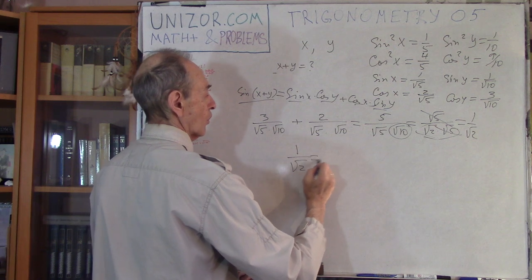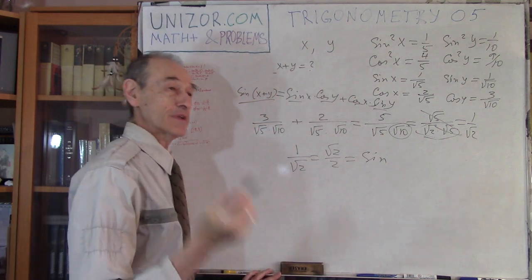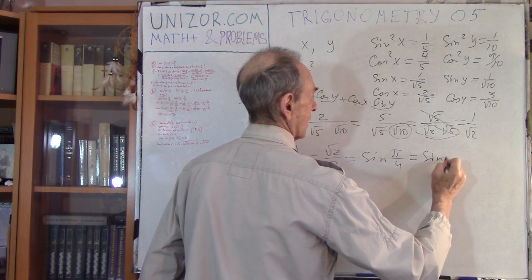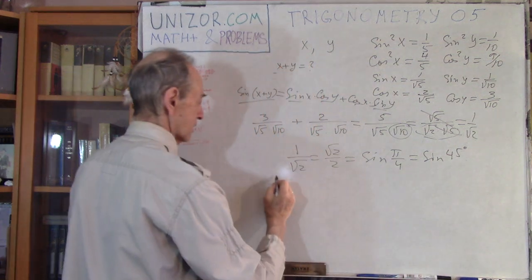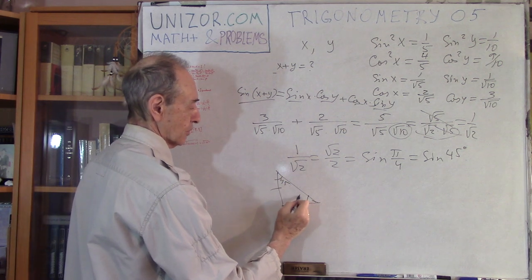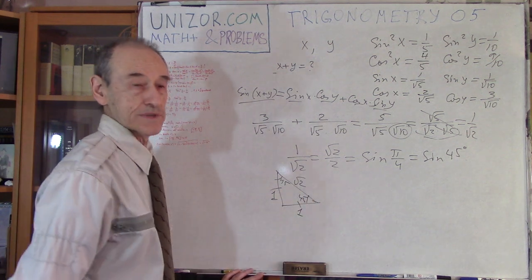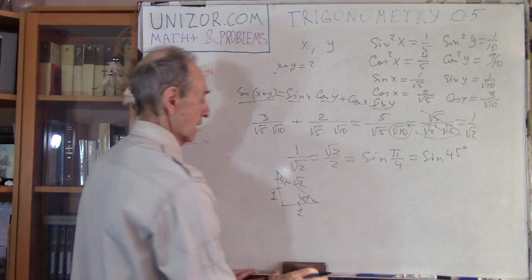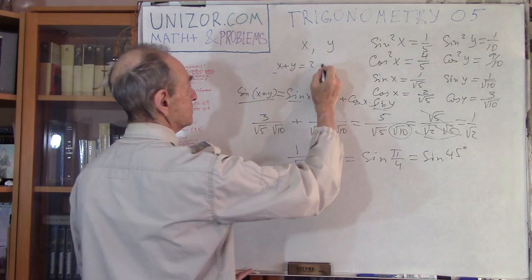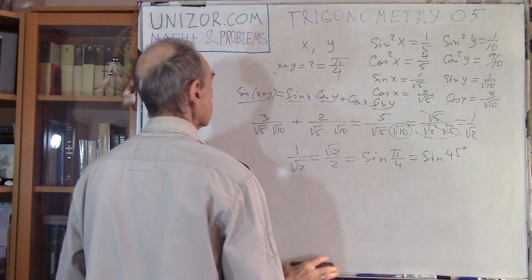One over root two, or root two over two — this is the sine of 45 degrees. If you have a right triangle with equal catheti of one, the hypotenuse is root two by the Pythagorean theorem, so one over root two is sine or cosine of 45 degrees, which is pi over four. So the answer is pi over four radians, or 45 degrees. That's the second problem.